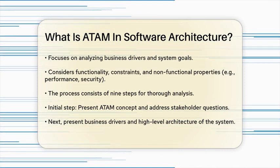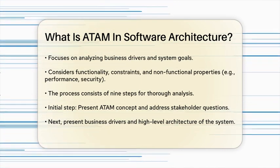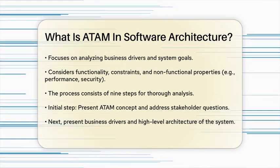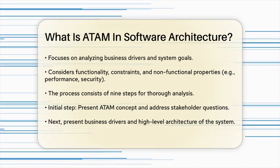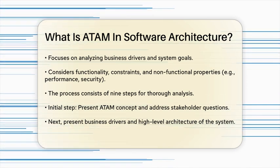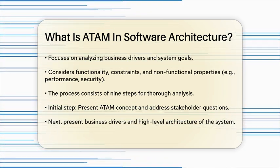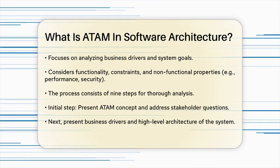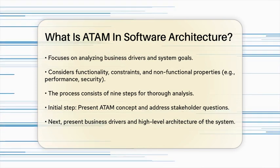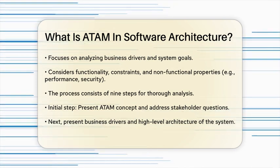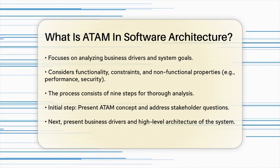The process is divided into nine steps. First, you present the ATAM concept to the stakeholders and answer any questions they might have. Next, you present the business drivers and the high-level architecture of the system. Then, you identify different architectural approaches and generate a quality attribute utility tree, which maps the core business and technical requirements to specific architectural properties.